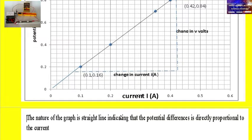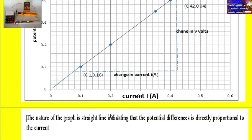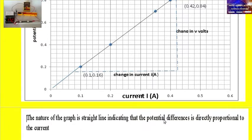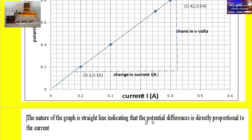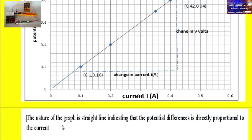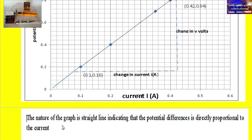The nature of the graph is a straight line, indicating that the potential difference is directly proportional to the current. It is a straight line passing through the origin with a positive slope.